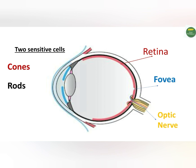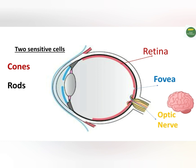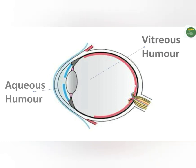The spherical shape of the eye is maintained by certain fluids whose pressure helps to maintain the shape of the eyeball. These fluids are the aqueous humor and the vitreous humor. They are found in the eye and help maintain its shape, while also causing refraction in the eye.